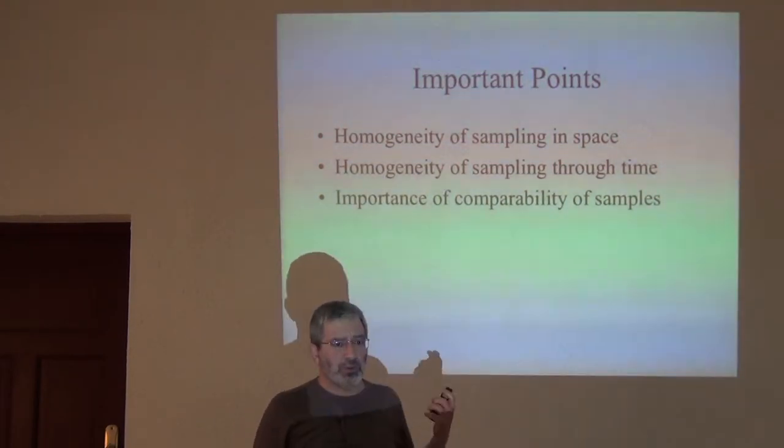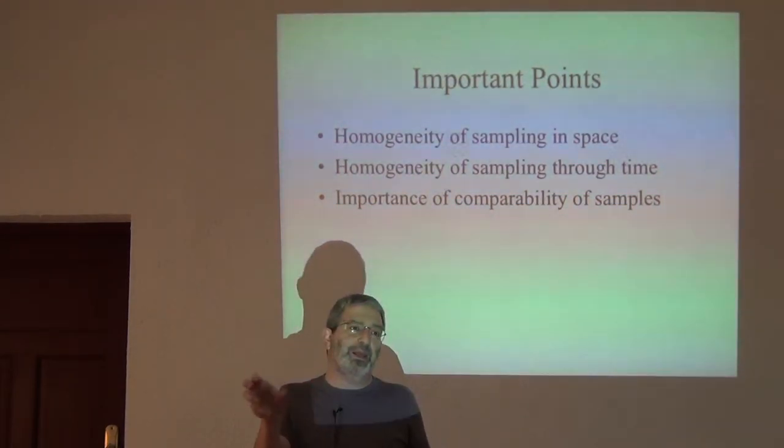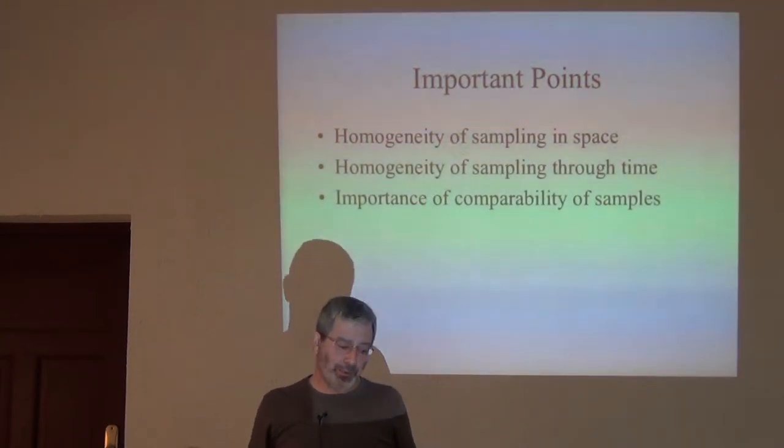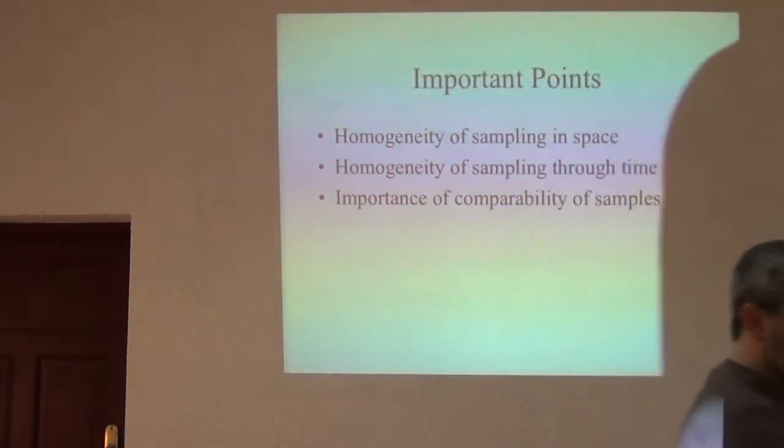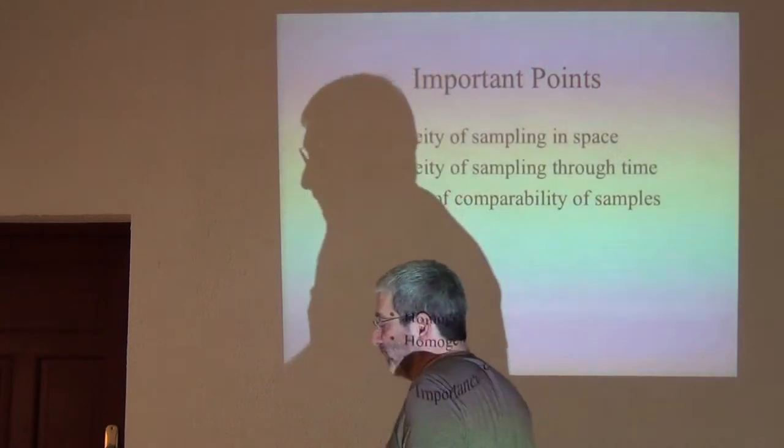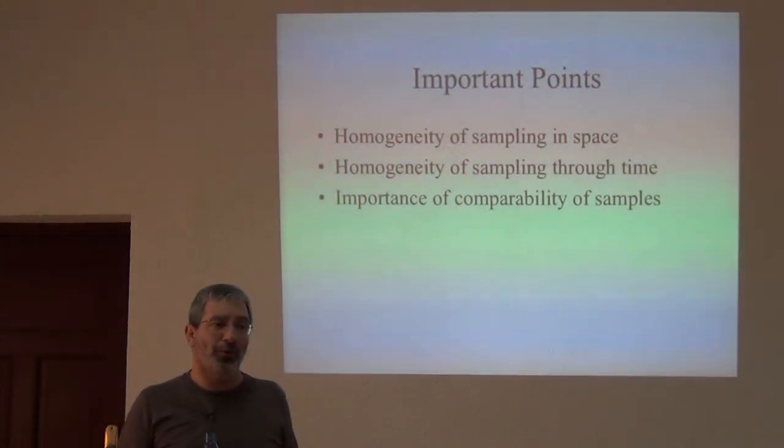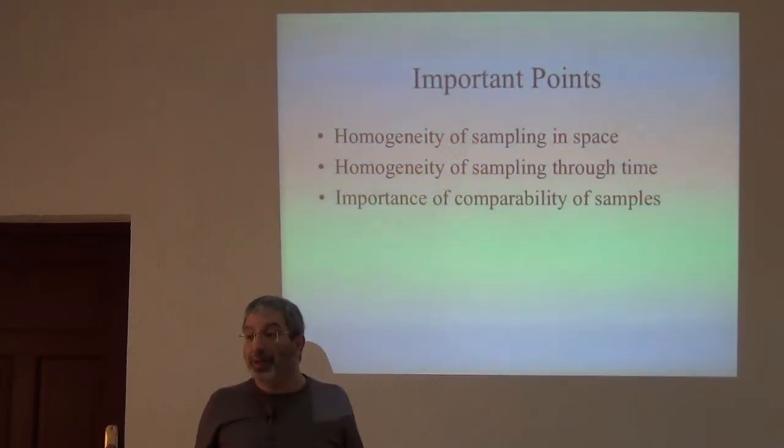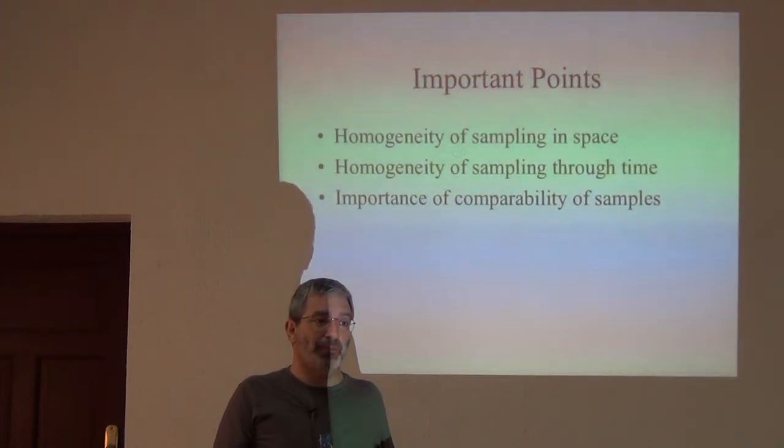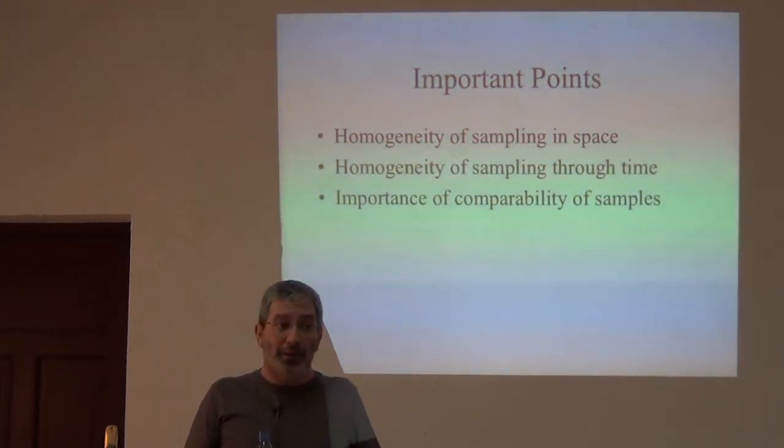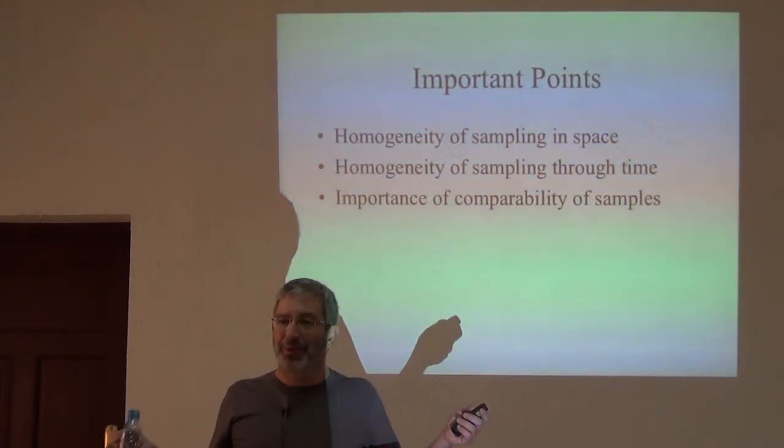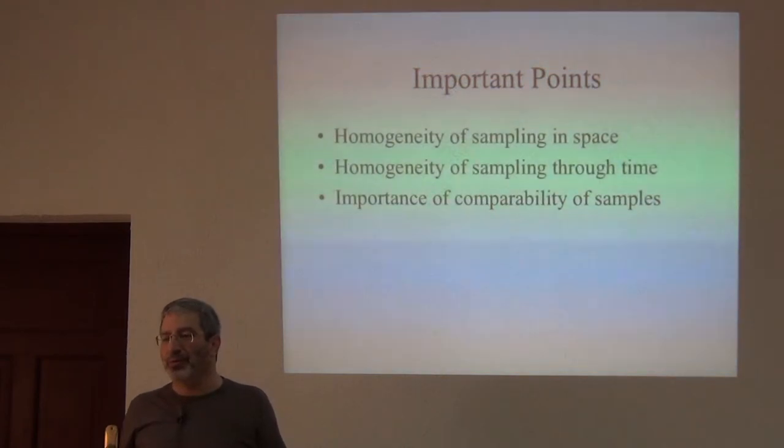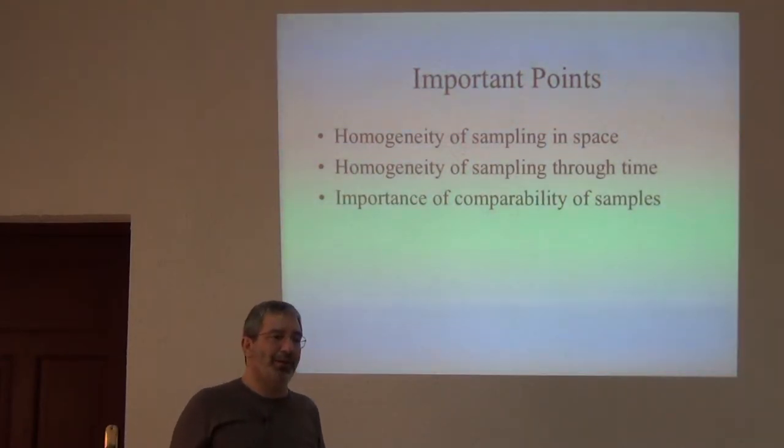So, a partial solution to that is to keep separate daily lists for the different ways that you sample. So, for example, herp guys. You could keep a daily list for diurnal surveys, a daily list for pitfalls, and a daily list for nocturnal surveys. And bird guys could keep separate lists for mist nets and for observations. Now, that starts generating complexity. That starts generating more work and more hours spent on the daily list each night. But that is a step towards comparability of samples.